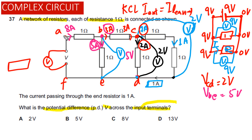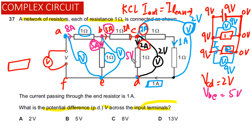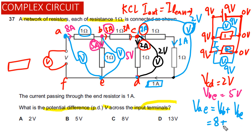The next potential difference we need to find is across point A and point E. The reading on a voltmeter between A and E equals the potential difference across resistor AB plus the potential difference across BE. The potential difference across AB is equal to 8 volts and across BE is equal to 5 volts, so VAE is equal to 13 volts.